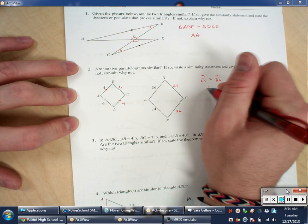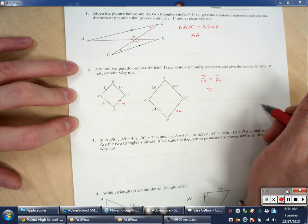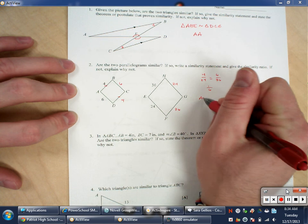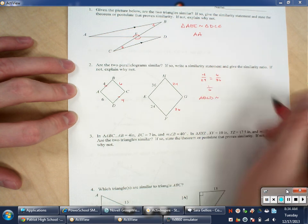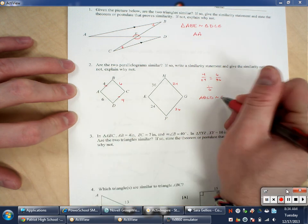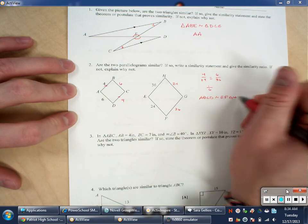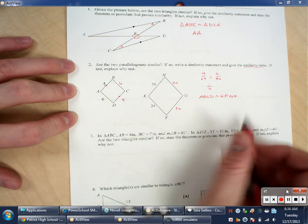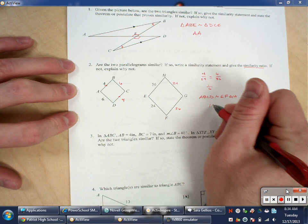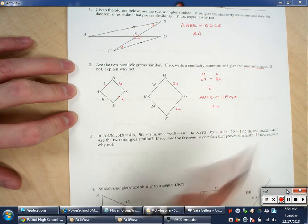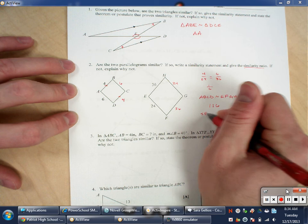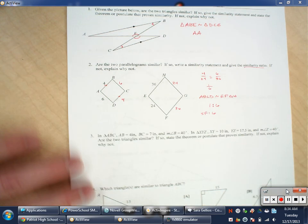When we reduce both of those, we get 1 sixth. They both equal 1 sixth. So now I know they are similar. So I'm going to say ABCD is similar. And if I go from A to B, then I need to go from E to F. So EFGH. And then it asks me for the similarity ratio. That's this. From ABC to EFGH is 1 to 6. If your teacher wants that as a scale factor, the scale factor of that would be 6, because it's 6 times as big.